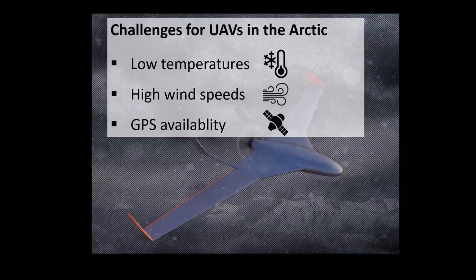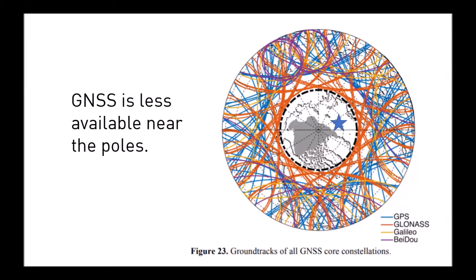The next challenge is GPS availability. Since many of us work with remote sensing, we know about satellite orbits — there aren't that many satellite orbits that go right over the poles where we want to do fieldwork. This graphic shows the ground tracks of all GNSS core satellites, and you can see they don't directly pass over the poles. This somewhat limited coverage can introduce problems both with the accuracy and the availability of GPS, which is a key component needed to operate drones safely and in a controlled way.